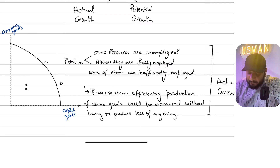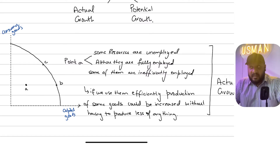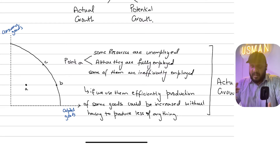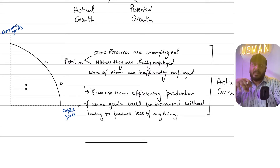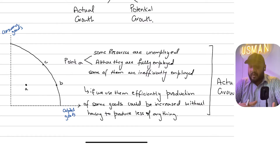At point A, some resources could be unemployed, or even if your resources are fully employed, they might be inefficiently employed. If you're inefficiently employing your resources, you're not maximizing your economy's capabilities to produce output on the production possibility curve. Inefficiently employing your resources will never let an economy fully capitalize on its potential.